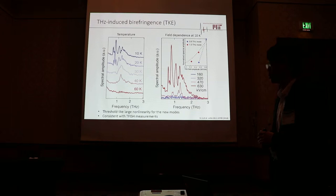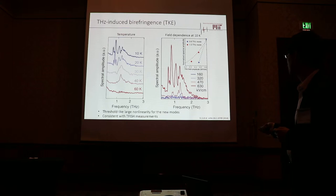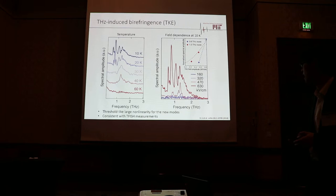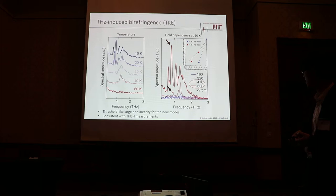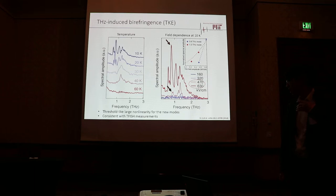What's most striking is if you look at the terahertz field strength dependence at 10K — these new modes actually behave in a highly nonlinear fashion. A small increase in the terahertz field strength, like a 34% increase from 470 kV/cm to 630 kV/cm, produces a 700% increase in the phonon spectral amplitude. This is clearly a highly nonlinear behavior most likely associated with the phase transformation.